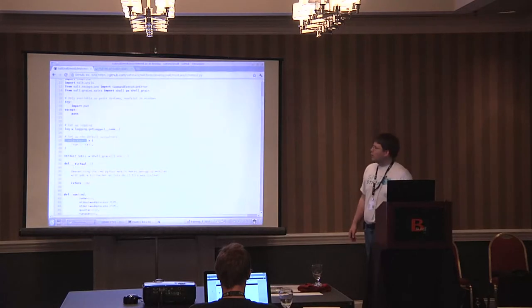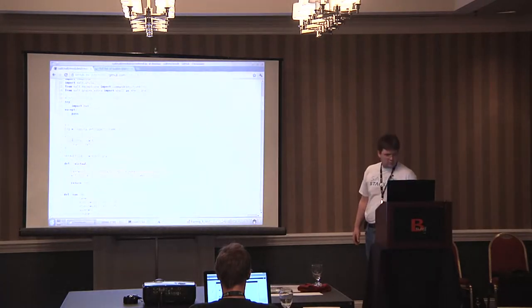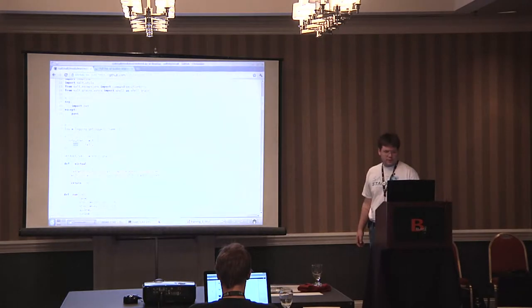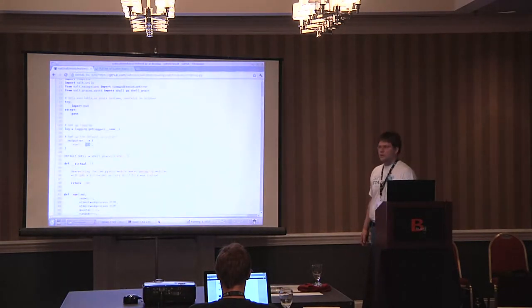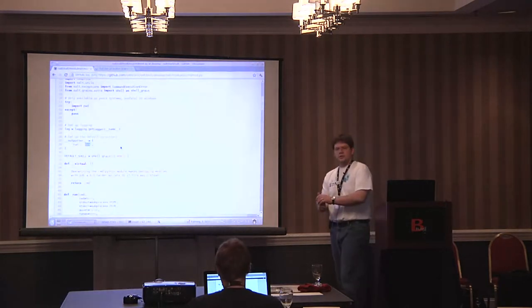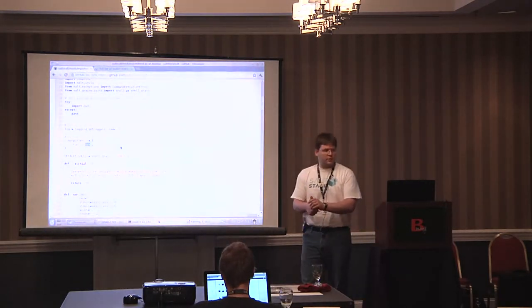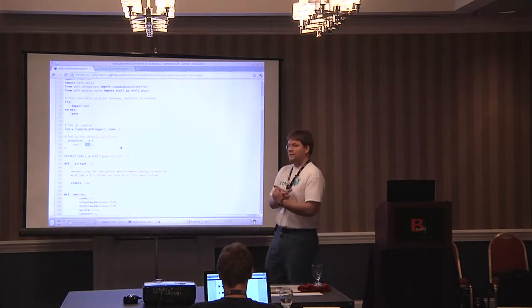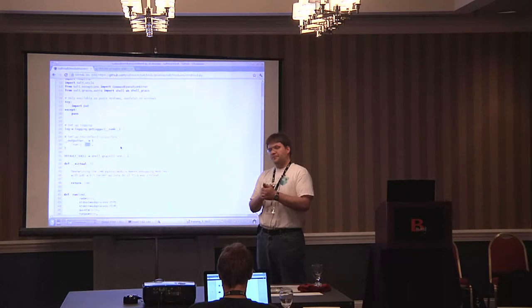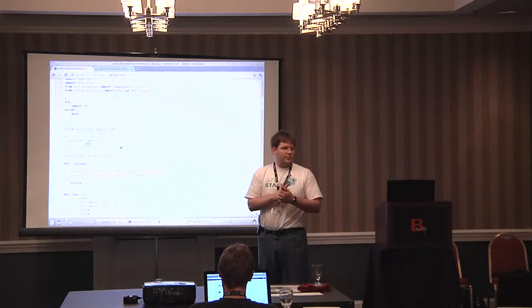And then we've got the outputter system here. We define this dictionary called outputter. And then we define a function, run. And then the outputter that we're going to use. So, we can output things either as text, which is what I just showed you with the command dot run. We can output things the default way, which is to use Python's pretty printer module.